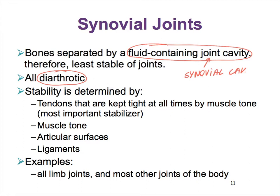If you think about it, sutures are very, very stable—those bones cannot budge. But synovial joints are extremely mobile, and therefore they're constantly threatened by the bones possibly going out of the joint. And so there are some things that can improve stability.